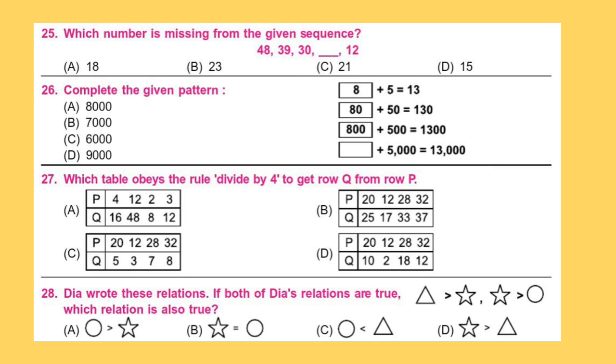Question 27. Which table obeys the rule divide by 4 to get Q from P?